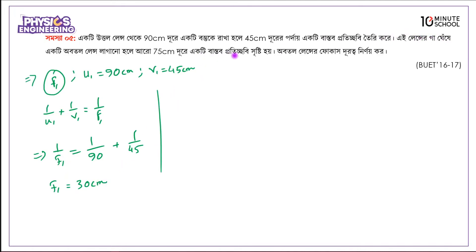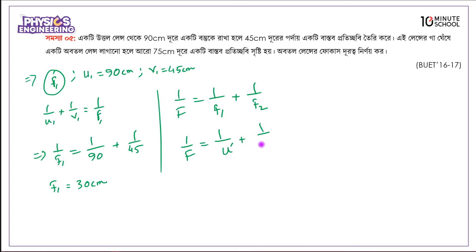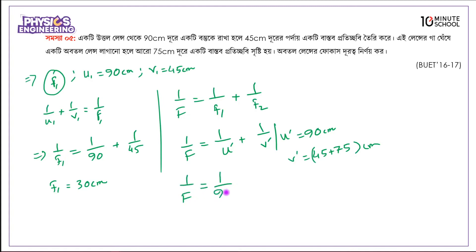Now a second lens is added 75 centimeters from the first, and the final image is at 60 centimeters from the second lens. Using the combined lens formula: 1 over f equals 1 over f1 plus 1 over f2. Using 1 over f equals 1 over u_prime plus 1 over v_prime, with u_prime equals 90 and v_prime equals 75: the combined focal length f equals 360 over 7 centimeters.